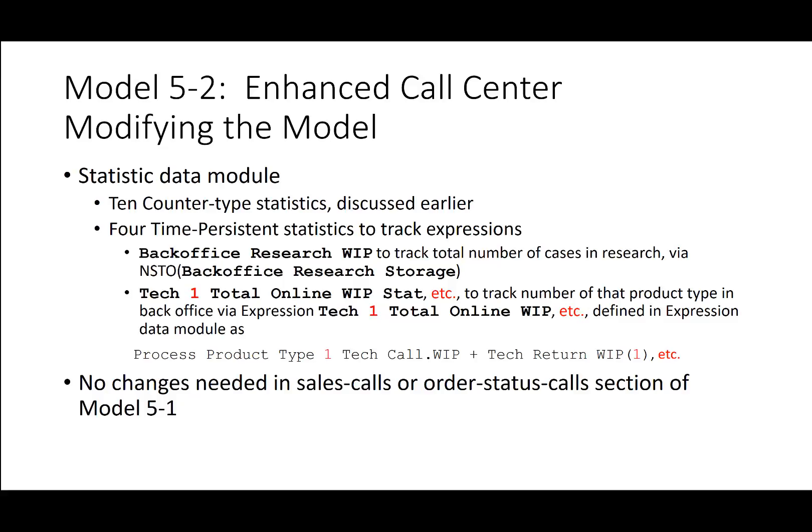The statistic data module has 10 counter-type statistics and four time-persistent statistics to track expressions: back office research WIP for total cases in research, and tech one total online WIP stat, etc., to track the number of each product type in back office via expressions. No other changes are needed in sales calls or order status calls sections.